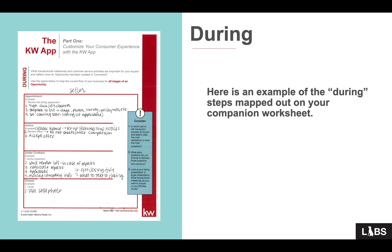Now that you're back, let's look at what I mapped out for my seller guide for the during transaction. I've got the appointment, the active, the under contract, and the closed, all broken apart separately. Under appointment: review a listing agreement, sign documents and disclosures, prepare to list — stage, photo, survey, utility info, etc. — and do a coming soon listing if applicable.